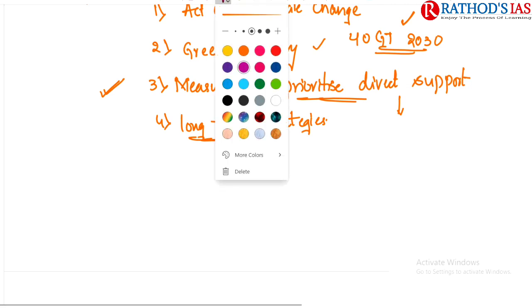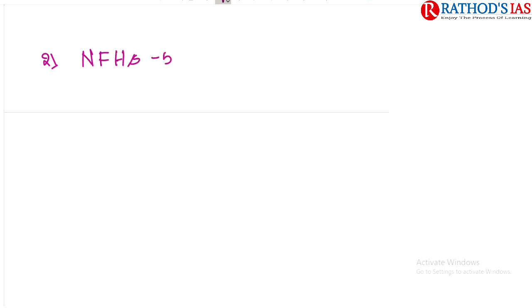The next topic is National Family Health Survey 5. This topic is very important from the mains perspective, coming under health in GS Paper 2. We are going to discuss why it is in the news, background, nutritional concerns highlighted in the report, the important issue of anemia, and the need and way forward.